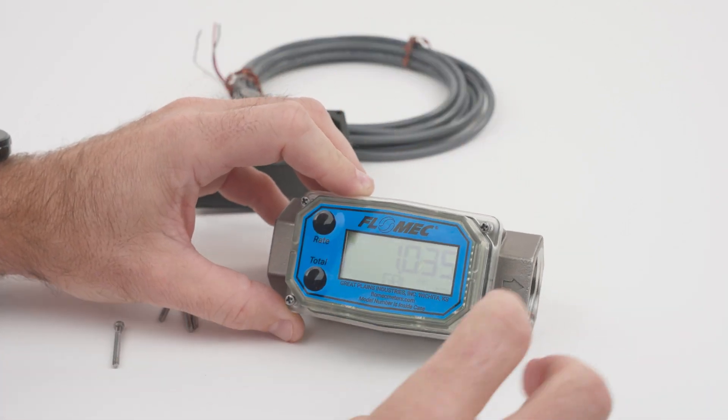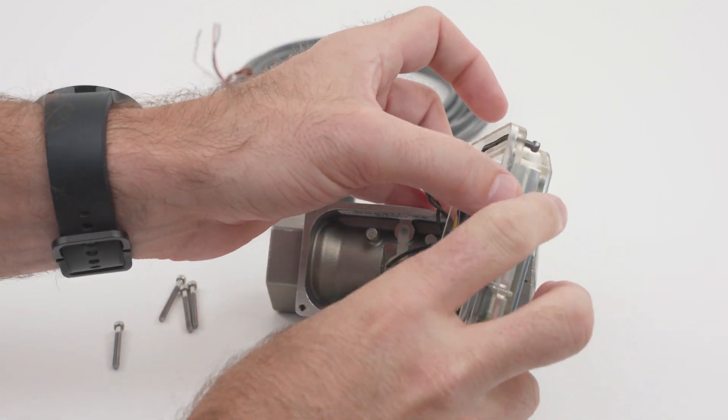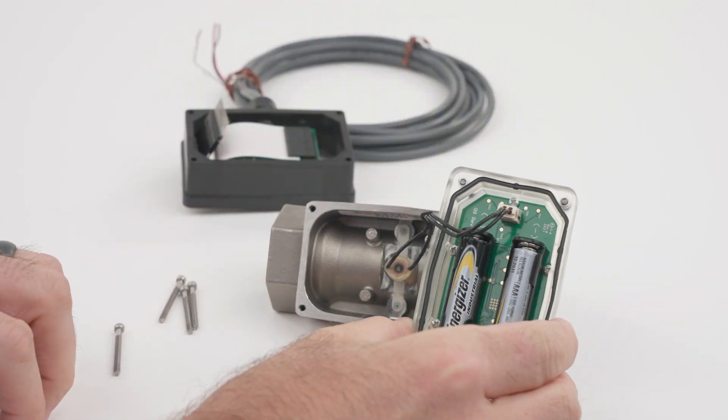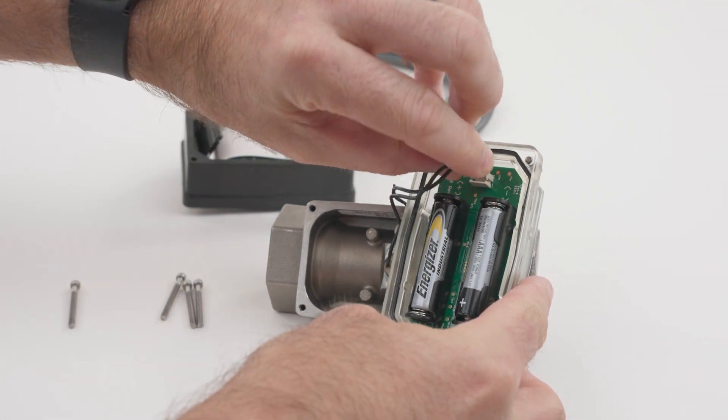Then carefully unplug the coil cable from the back of the display circuit board and remove the batteries. The batteries and four screws will not be reinstalled when the 4-220 milliamp module is installed.